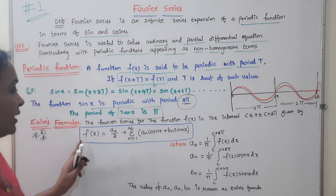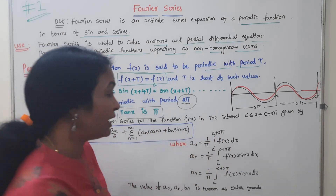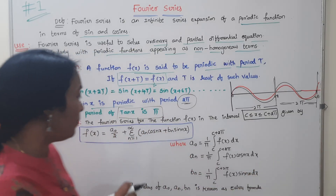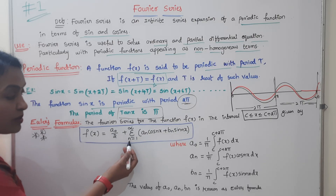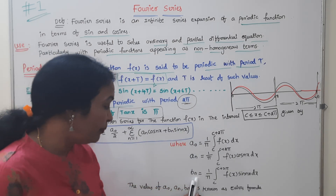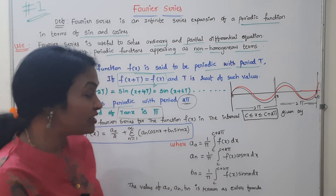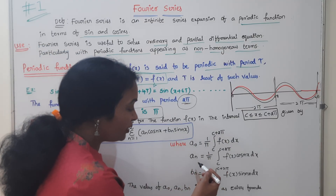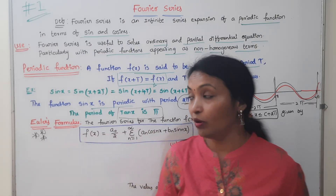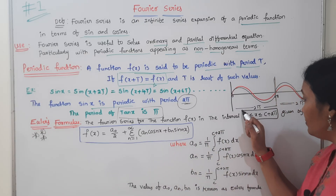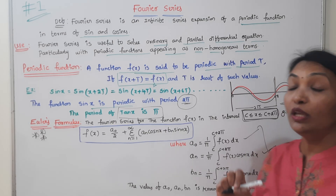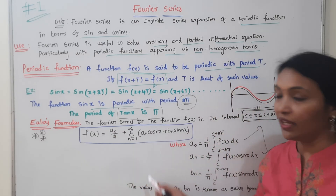For the Fourier series, when the function f(x) lies in the interval c to c plus 2π, the Fourier series is: A₀/2 plus summation from n=1 to infinity of (aₙ cos nx + bₙ sin nx). The coefficients A₀, aₙ, bₙ are given by 1/π times the integral from c to c plus 2π. The interval of definition is c to c plus 2π. This is the Euler's formula — the definition of the Euler's formula for Fourier series.